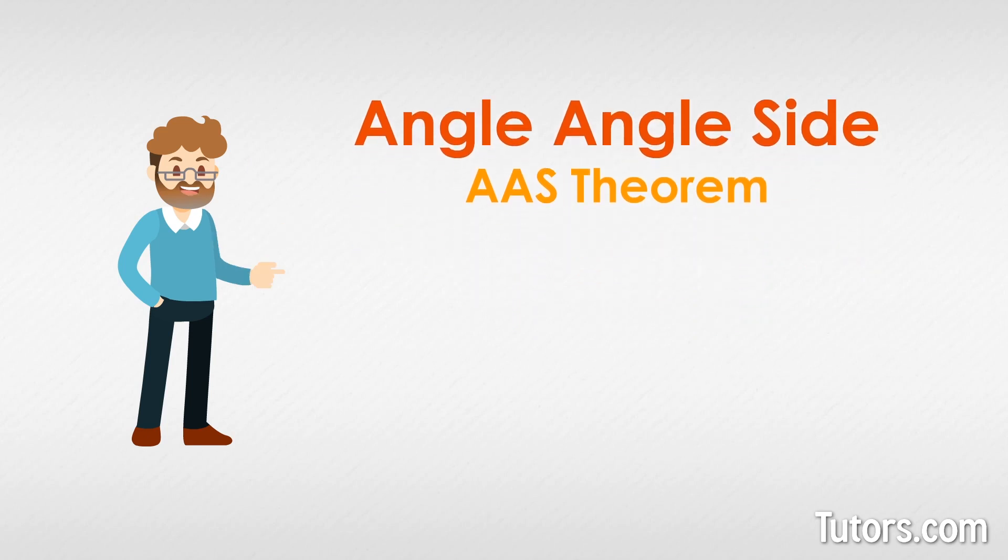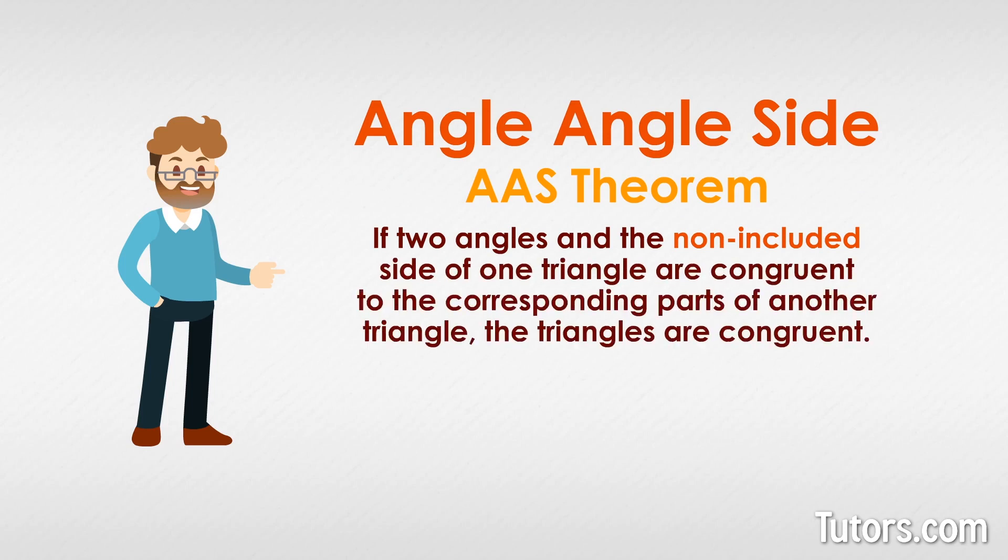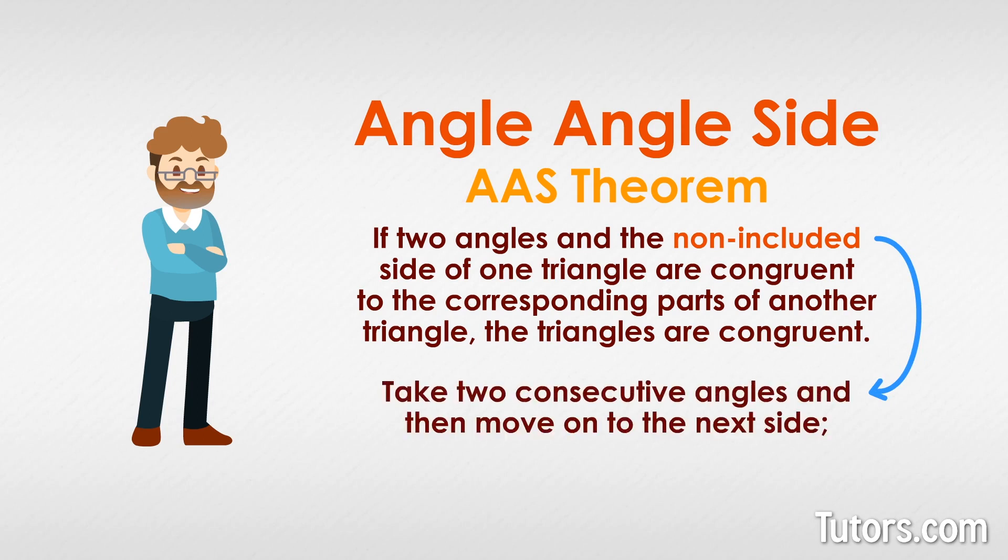The AAS theorem says, if two angles and the non-included side of one triangle are congruent to the corresponding parts of another triangle, the triangles are congruent. Notice how it says non-included side, meaning you take two consecutive angles and then move on to the next side, in either direction. You do not take the side between those two angles.